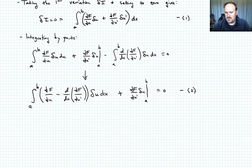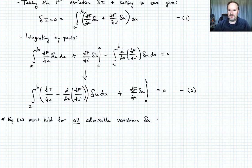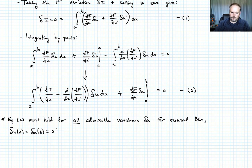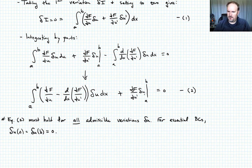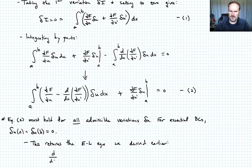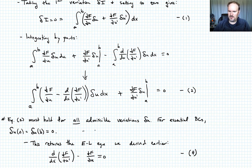Equation two must hold for all admissible variations delta u. In the case of essential boundary conditions, the requirement is that delta u evaluated at a and delta u evaluated at b must be equal to zero. When that happens, this boundary term drops out. We're left with only the integral, and we recover the Euler-Lagrange equation derived previously, written as d by dx of partial f with respect to u prime minus del f del u equals zero. Call this equation four, and let's call that set of boundary conditions equation three.